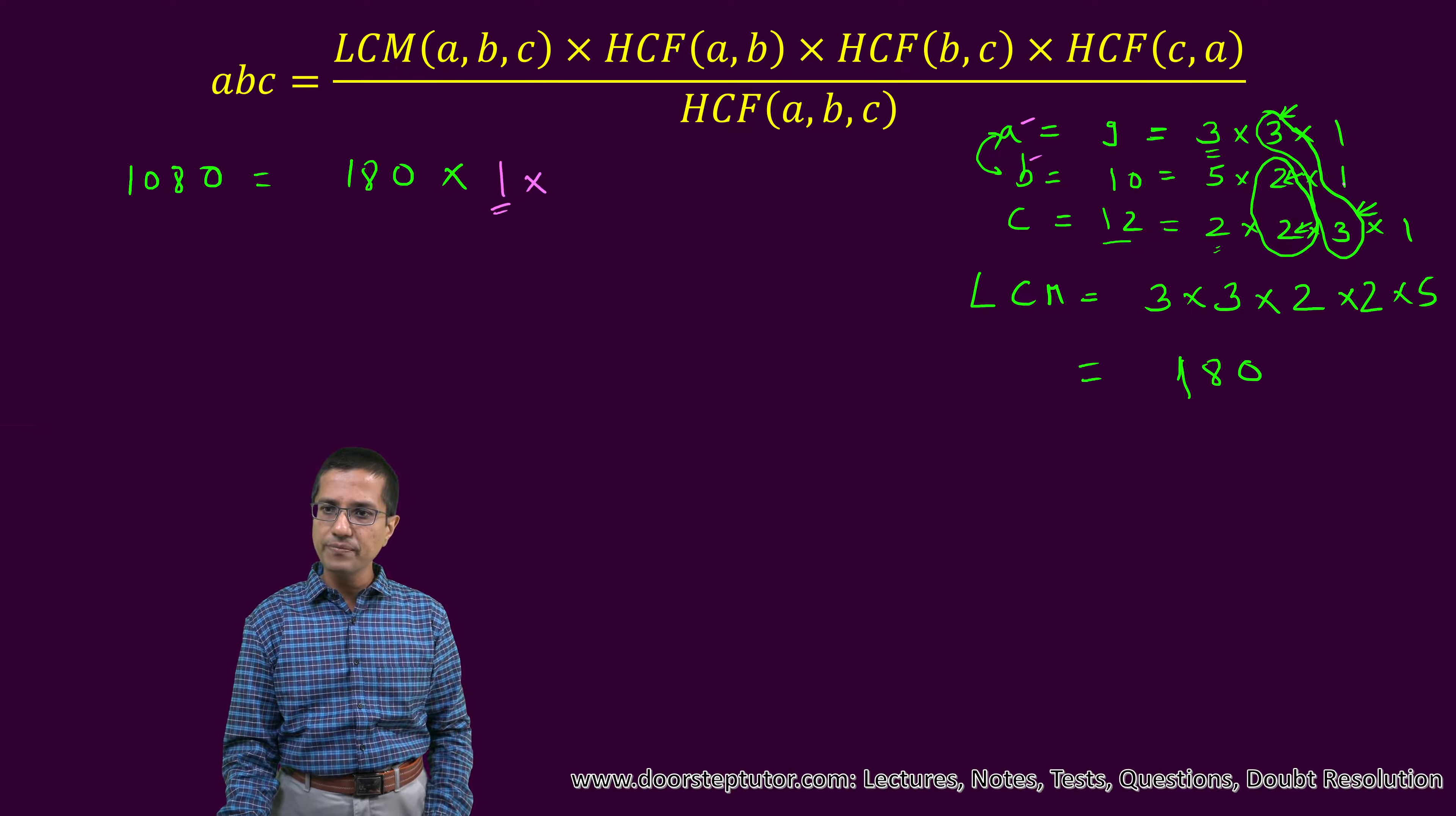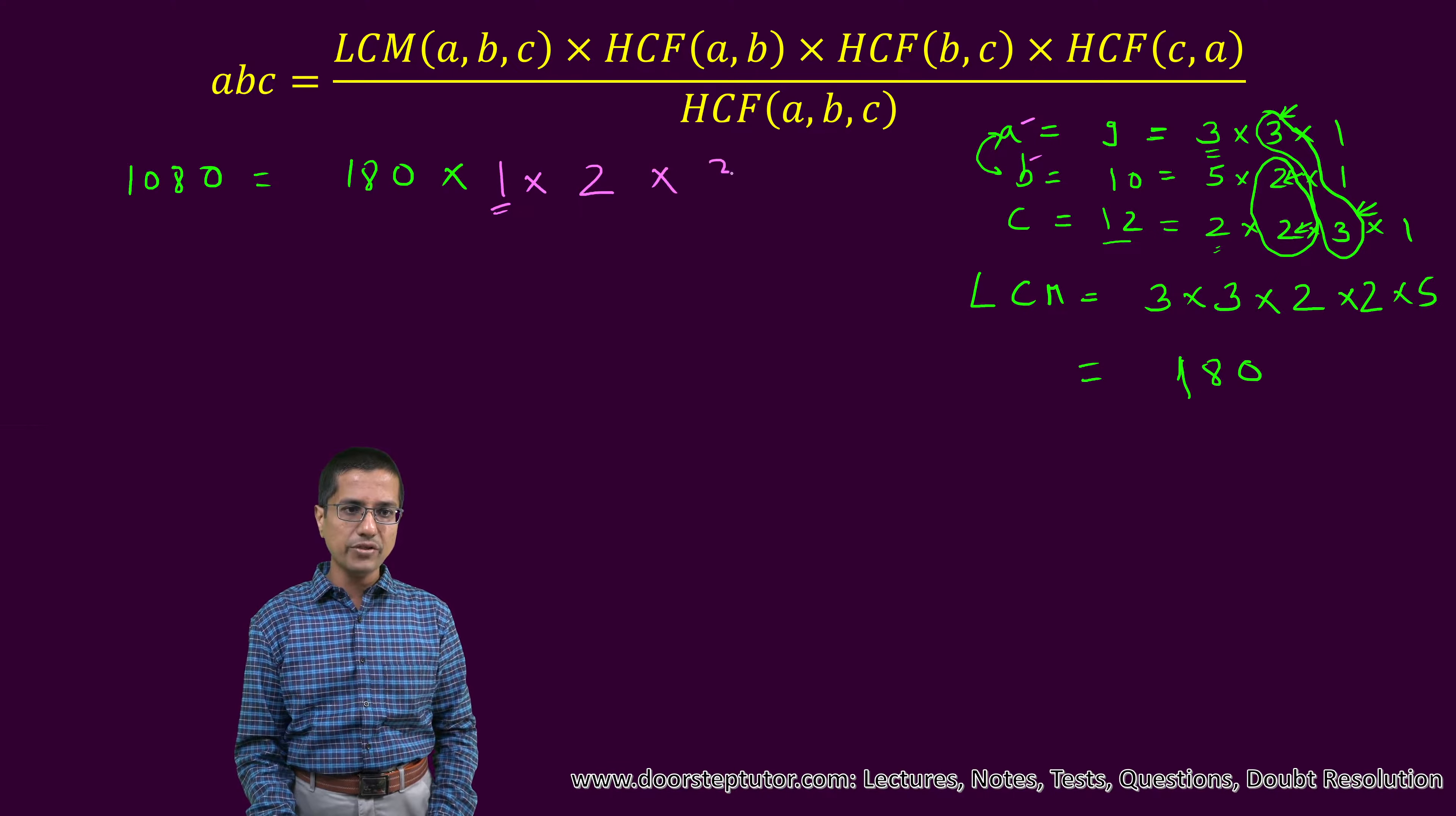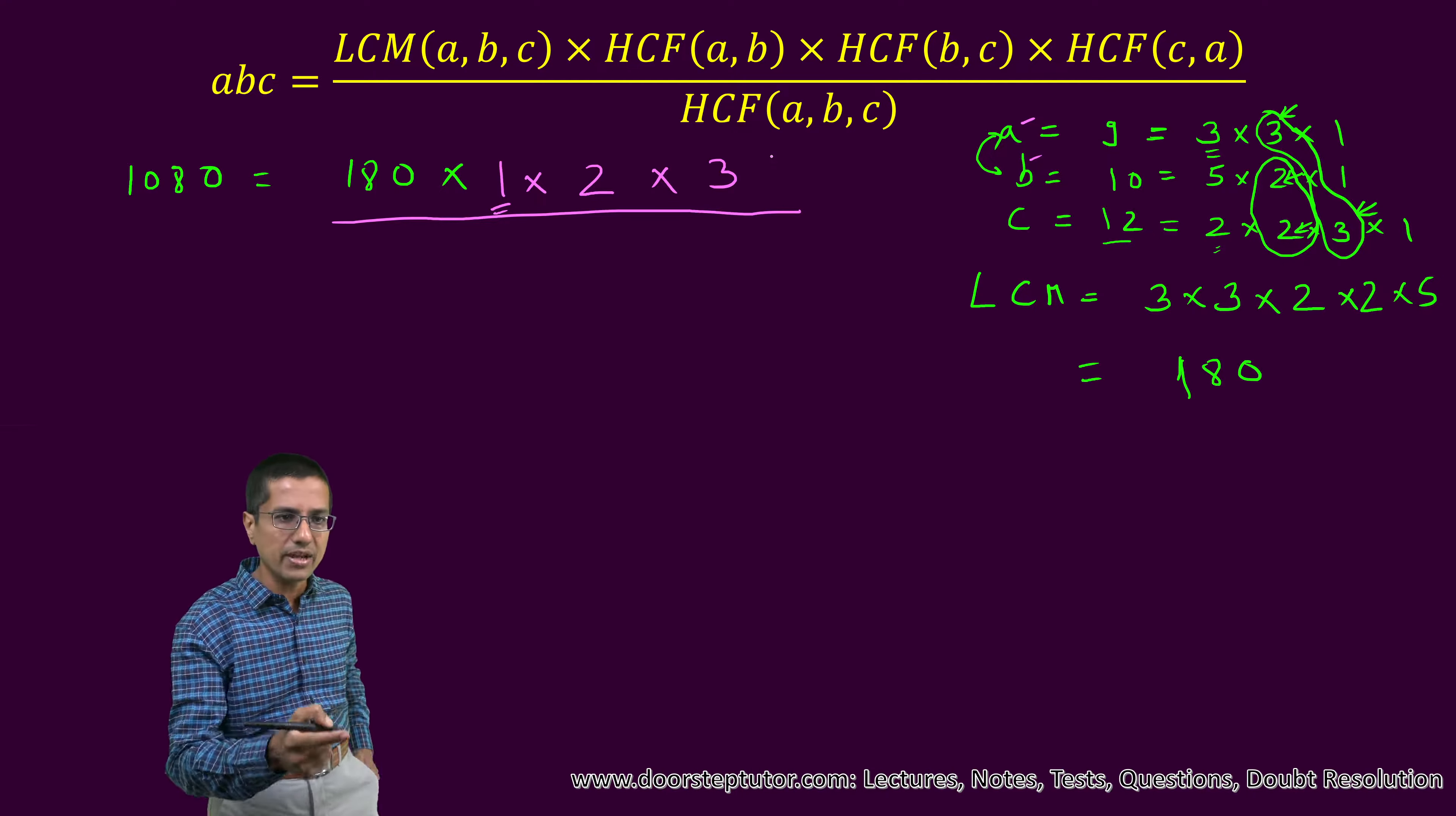Then HCF of BC. So factors common between B and C. We know that there was a factor common here, which is two. And then HCF of CA. C and A. Between C and A, we know there was a factor common, which is three. Now what about HCF of A, B, C? Now HCF of A, B, C means that factors which are common to all three A, B and C.